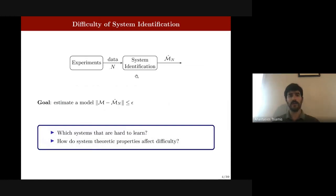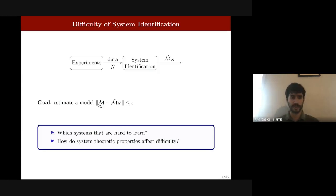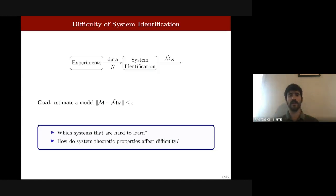This is also known in the control community as system identification — we want to learn a model based on a finite number of data with adequate accuracy, where M without the subscript n is the ideal model we want to estimate. Fundamental questions include: what is the sample complexity, how many samples do we need for good performance, and which systems are easy or hard to learn?